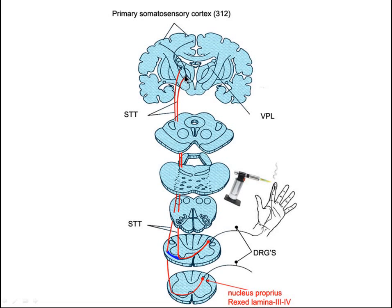Finally, the pathway goes to the VPL of the thalamus — the ventral posterior lateral nucleus. The trigeminal complex goes to VPM. The last fiber goes from the VPL up to area 3-1-2, and pain is perceived in the post-central gyrus, or the somatosensory cortex, area 3-1-2.